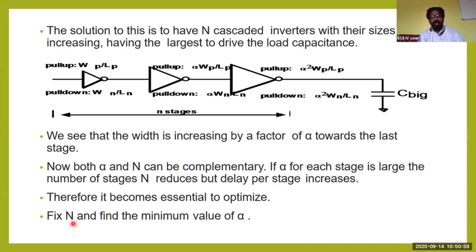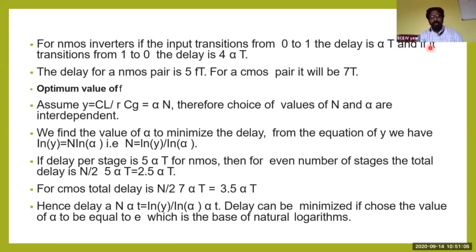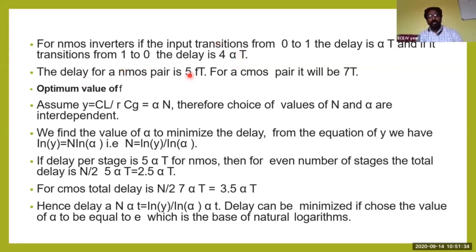For NMOS inverters, if the input transition is from 0 to 1, the delay will be alpha times t; from 1 to 0, the delay will be 4×alpha×t. The delay for an NMOS pair is 5×alpha×t, and for a CMOS pair it is 7×alpha×t. This is an important point for competitive exams.